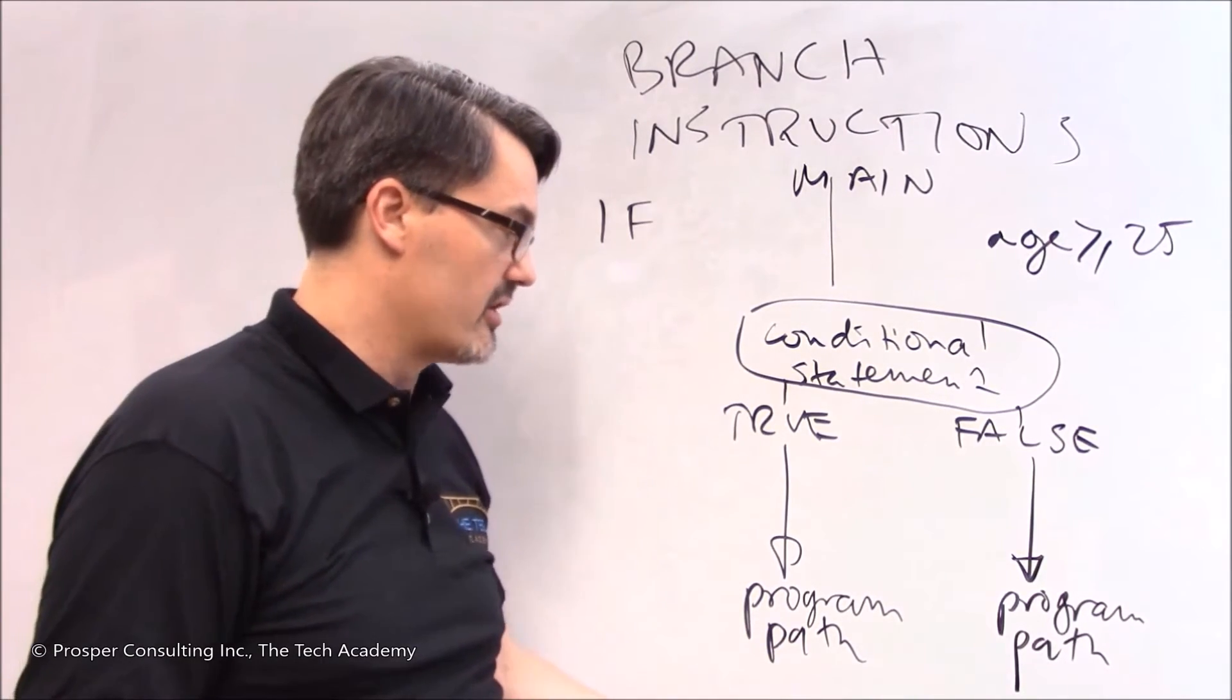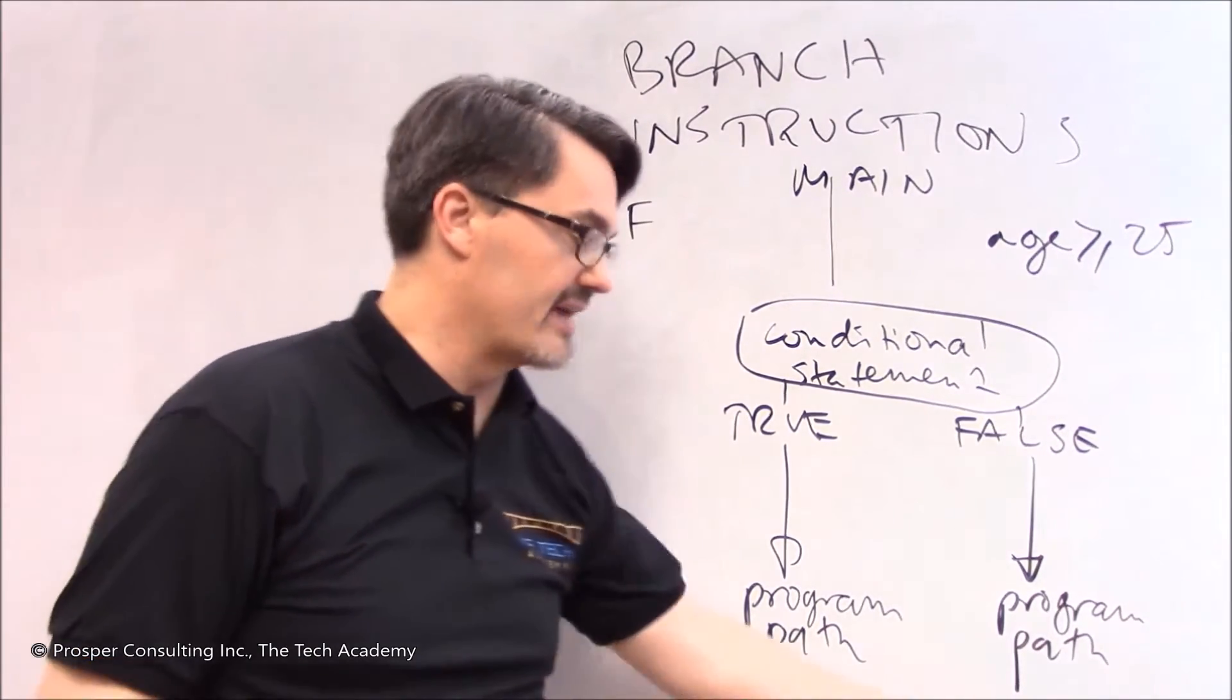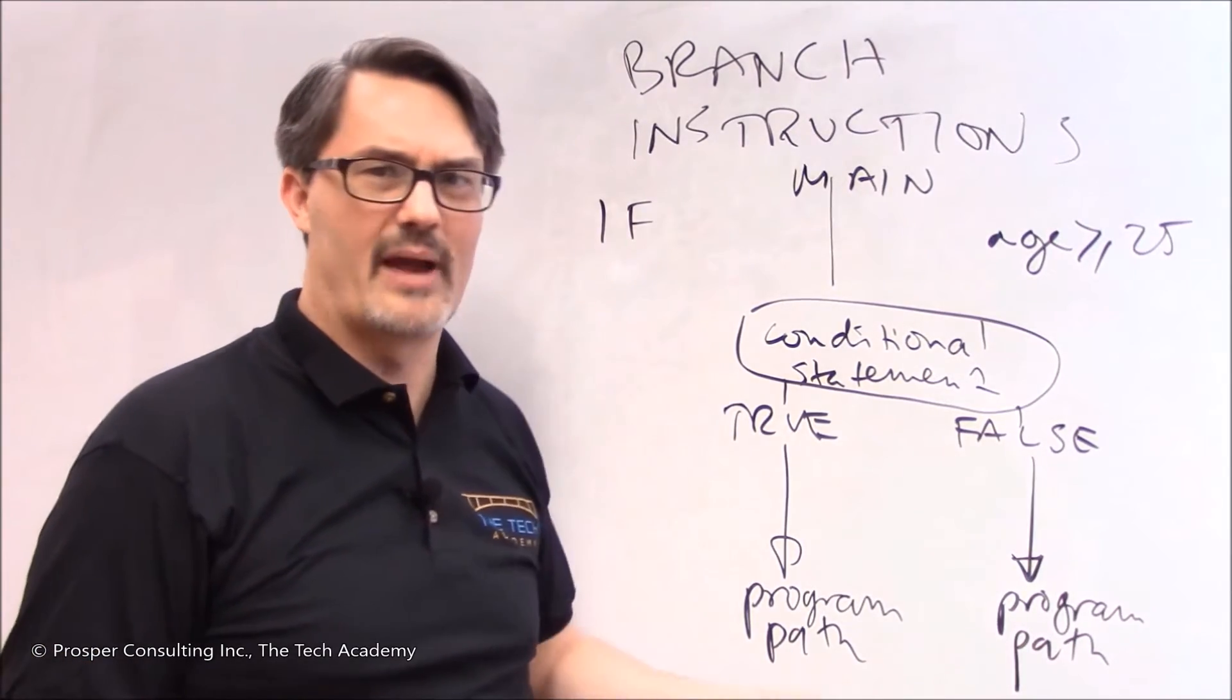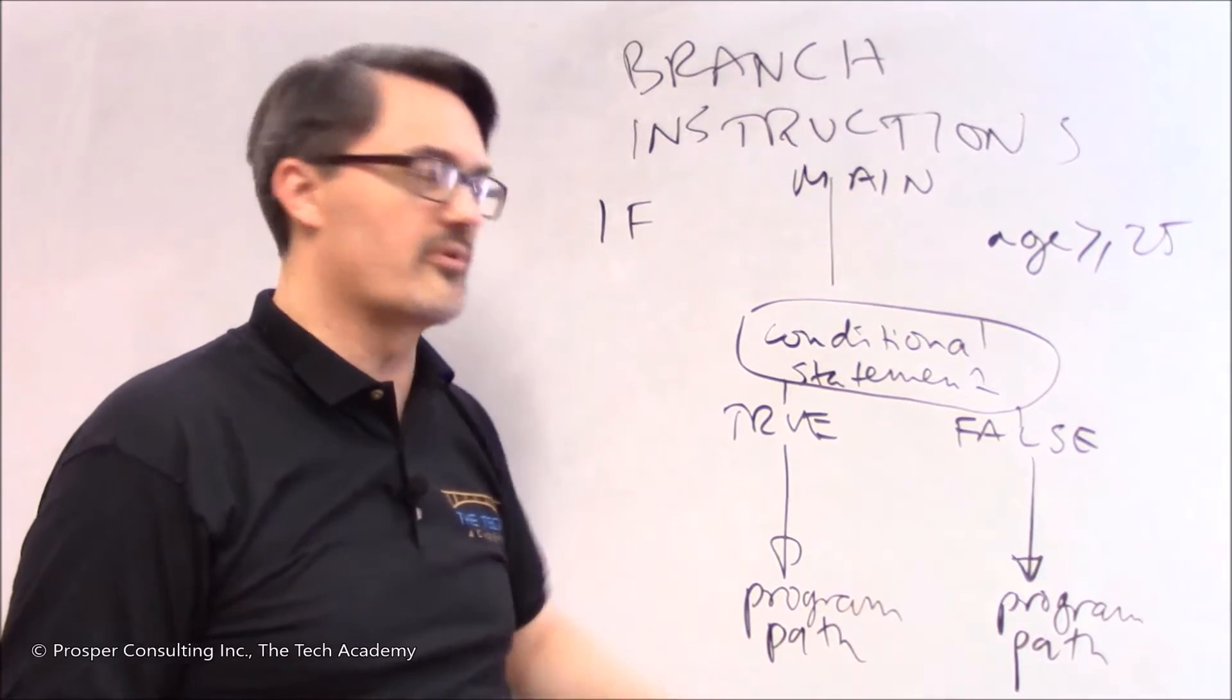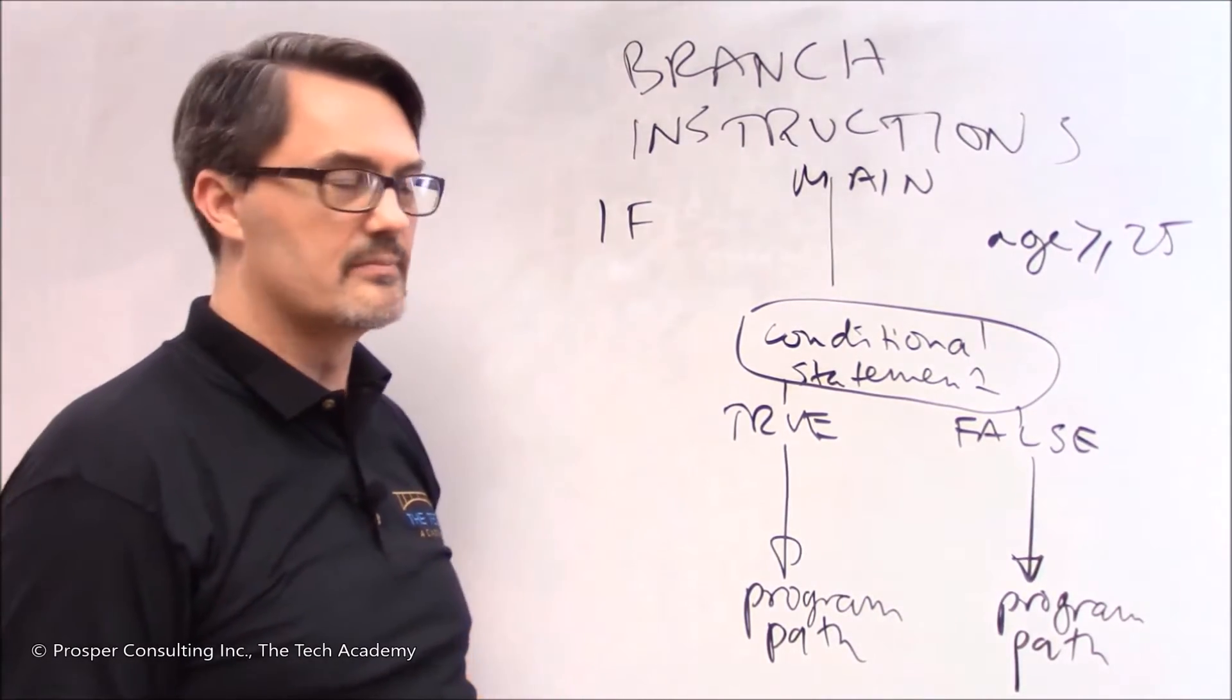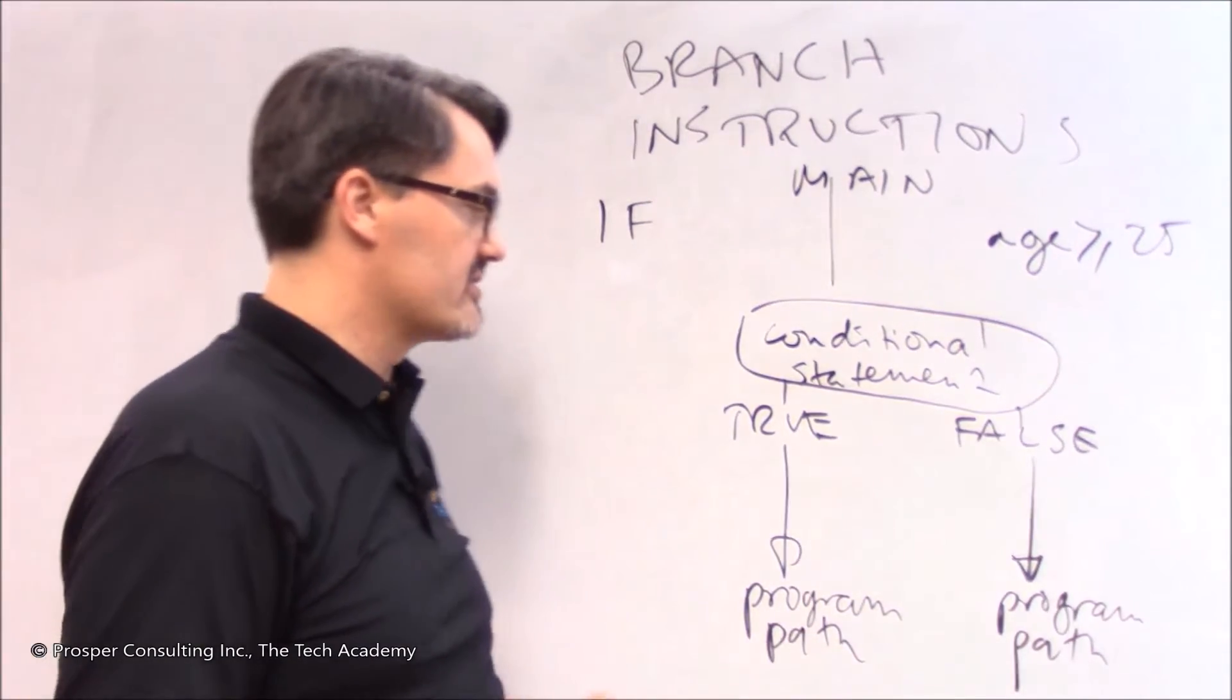Now farther on down the program are at least two paths of execution. These are computer instructions. They're different from one path to the next. It would be absurd to make two identical paths when you're trying to check the condition and have one of two separate things happen based on the condition. So you have two different paths or more.